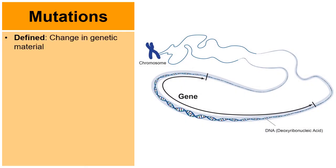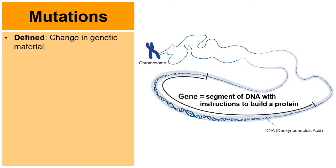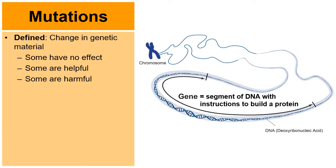When we talk about mutations, this is a change in genetic material. A gene is a segment of DNA with instructions to build a protein — it has A's, T's, C's, and G's that tell the cell how to build various proteins. Some mutations have no impact, some can actually be helpful, and other mutations can be harmful.